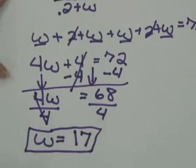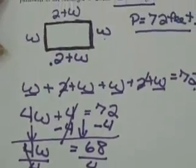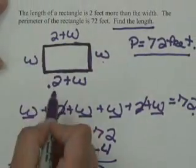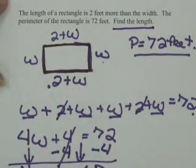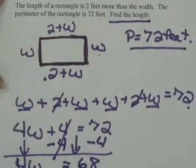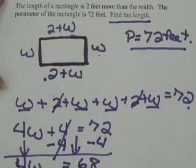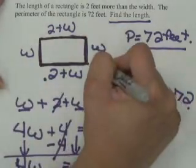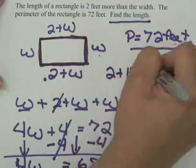Well, if we go back up to our picture, the length is 2+W, and take the value that we found and plug in 17, we'll find what the length actually is. So the length is actually 2+17, which equals 19 feet.